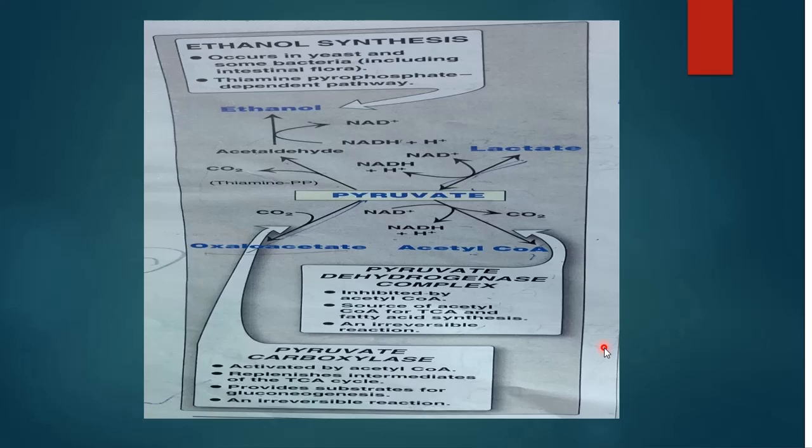In the liver, lactate is either converted to glucose by the process of gluconeogenesis — the formation of glucose from sources other than carbohydrate — or it is oxidized in the TCA cycle. Heart muscle exclusively oxidizes lactate to carbon dioxide and water via the citric acid cycle.